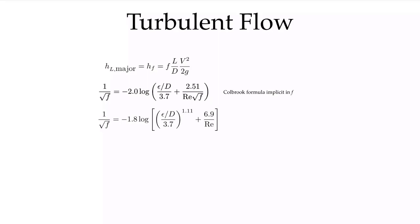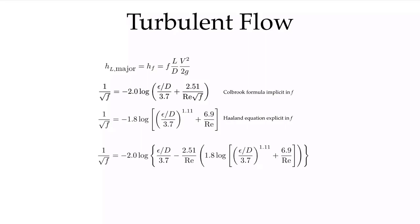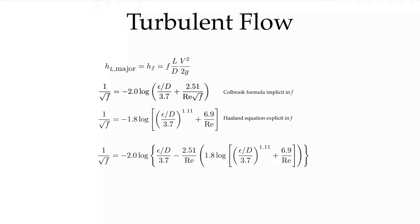We can find an approximation called the Holland equation, which is explicit in the friction factor. Combining the Colebrook and Holland equations and substituting, we get an expression that is explicit in f — we can solve for it directly once we know the roughness and the Reynolds number. This combined Colebrook–Holland equation can be used to generate the Moody diagram, which tells us everything we need to know about major losses in fully developed pipe flow.